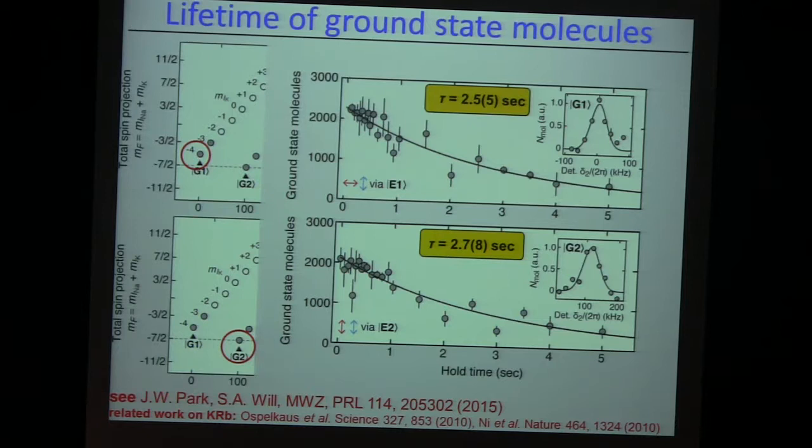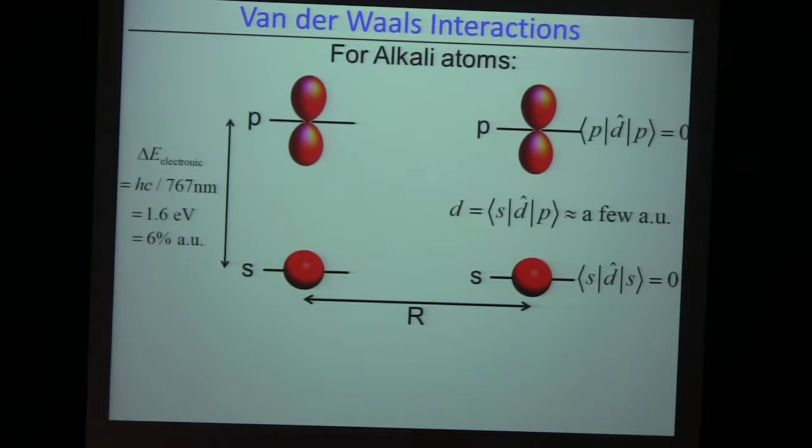We have the same lifetime in excited hyperfine states. It's not so surprising because hyperfine relaxation should be very small in these nuclear spin molecules. What about other types of interactions that could give us trouble? Let's think about the Van der Waals interaction between these two molecules. For alkali atoms, the Van der Waals interaction is driven by virtual transitions to the electronically excited states.